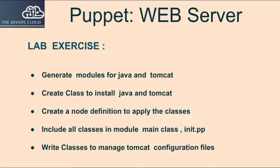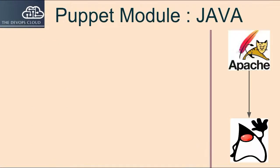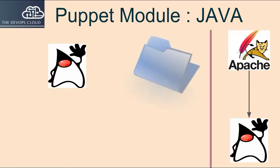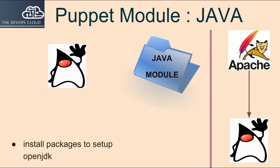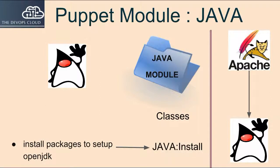To configure a Tomcat web server, first you need a Java package, as Tomcat has a dependency on Java. So you need a module to manage Java packages. To manage the Java package we will create a Java module, and inside that module's manifest directory we will create a class tomcat::install.pp to install the Java package.